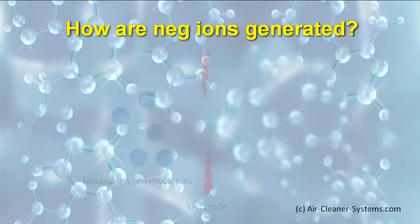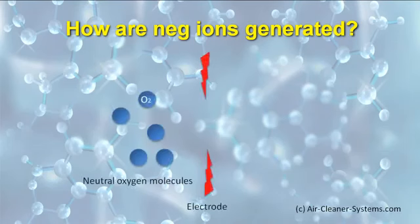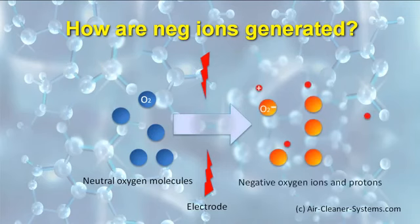How are negative ions formed? When oxygen molecules, which have a neutral charge, get treated by a negative electrode, they break apart forming negatively charged ions and positively charged protons.